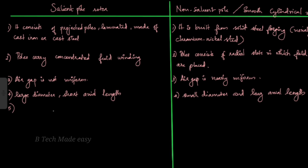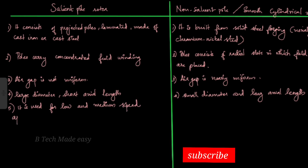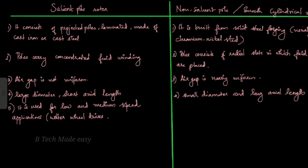Fifth point regarding speed: the salient pole type is used for low and medium speed applications. The non-salient pole type, with its small diameter and long axial length, is used for high-speed applications.